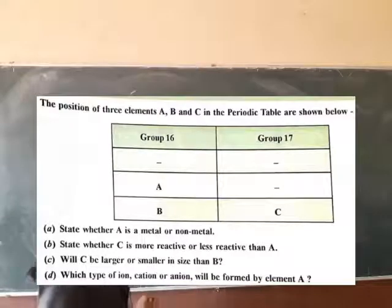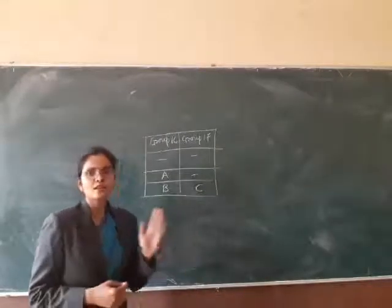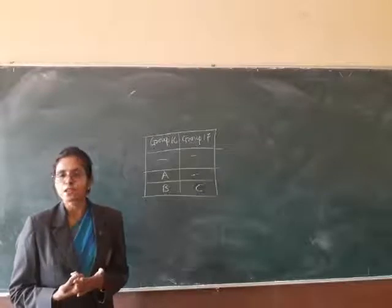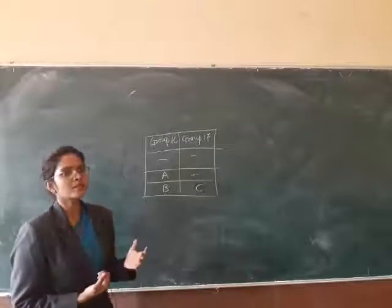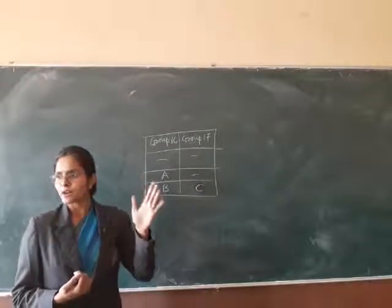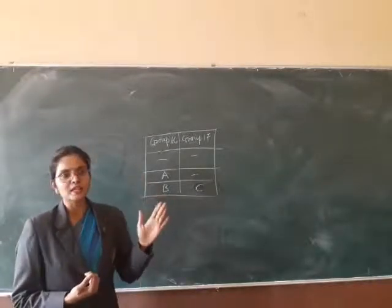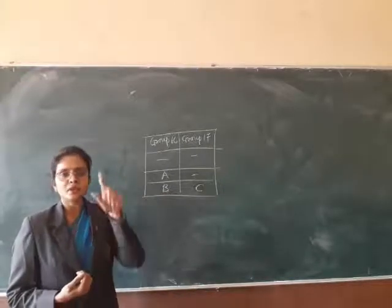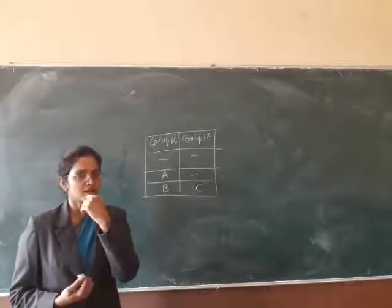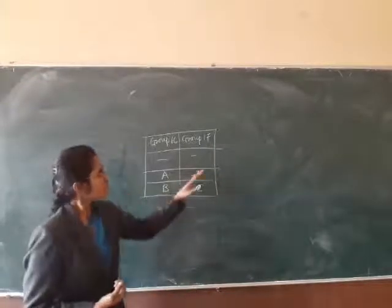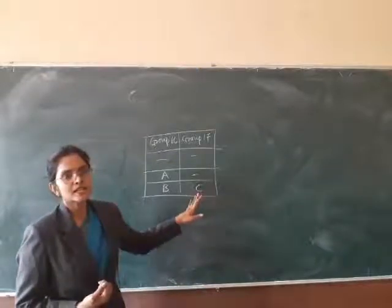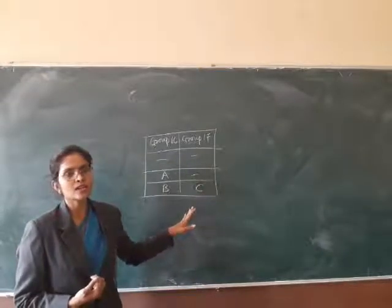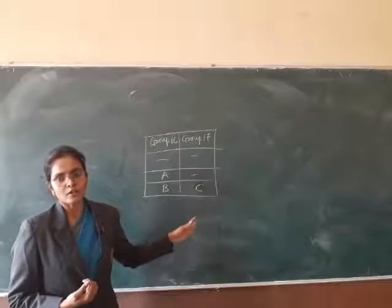Group 17 के members metals होते हैं कि non-metals होते हैं? Non-metals होते हैं। Group 17 मतलब chlorine, iodine, bromine। Group 17 के elements basically halogens होते हैं, और halogens क्या होते हैं? They are non-metal।